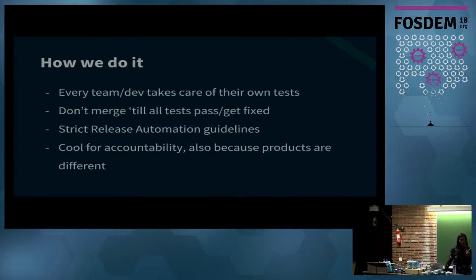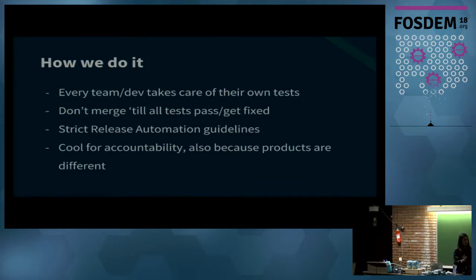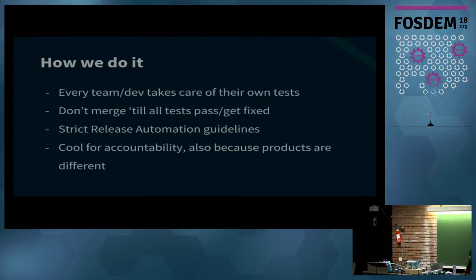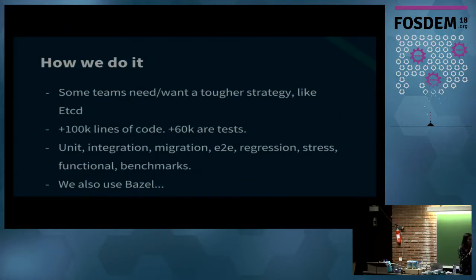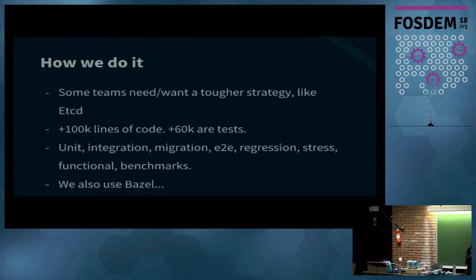We also have very strict release automation guidelines. The main goal is that if some tests don't pass, you shouldn't merge. This is not always 100% true, but we aim for that. Our products are very different - we have Tectonic which is more enterprise, we have etcd that everybody loves, and then we have Container Linux, and so on.